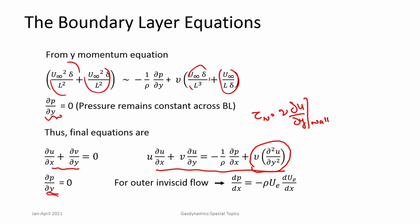The important term in the x-momentum equation is ∂²u/∂y². Across the y direction, pressure is constant — that is the third equation. Therefore, the pressure gradient ∂p/∂x: since p is a function of x only and not a function of y, ∂p/∂x can be written as dp/dx, which is imposed from the outer inviscid flow. You can evaluate it using Euler's equation or any inviscid formulation to get this pressure variation. So, these are the boundary layer equations — much simplified compared to Navier-Stokes. You consider an outer inviscid flow from which pressure is applied on the boundary layer, and the viscous forces on the body can be calculated using the boundary layer equations.